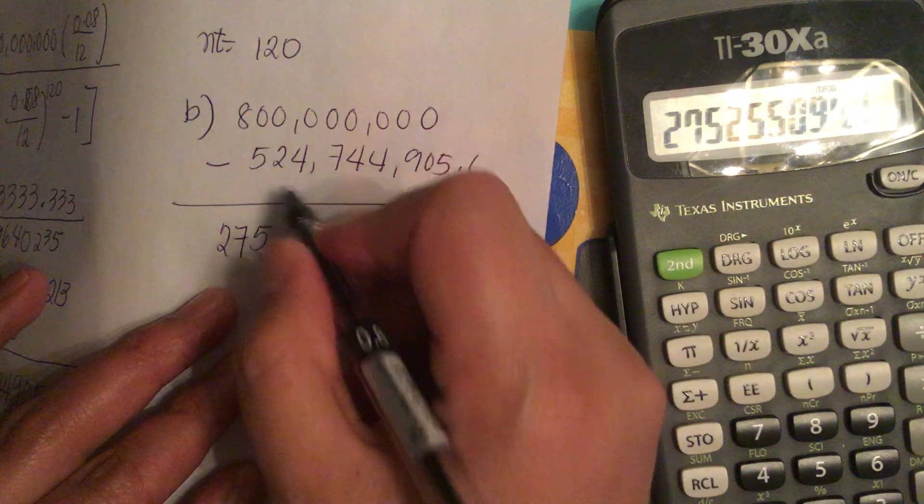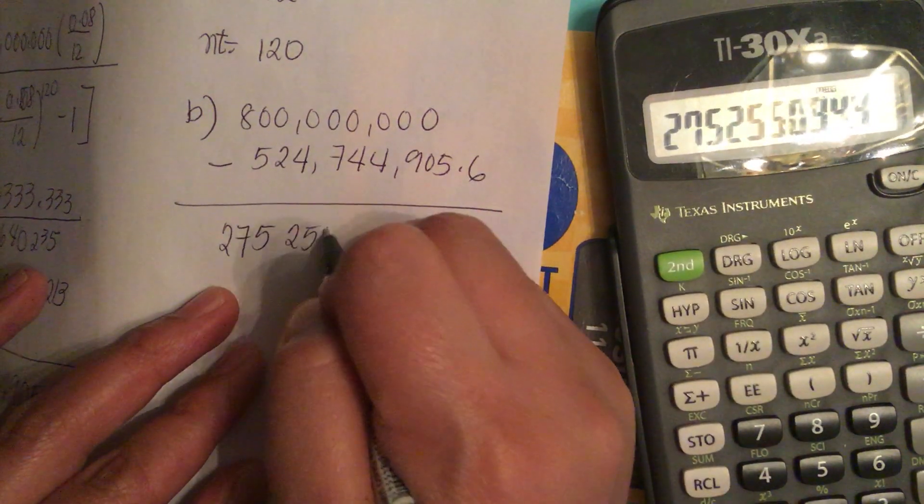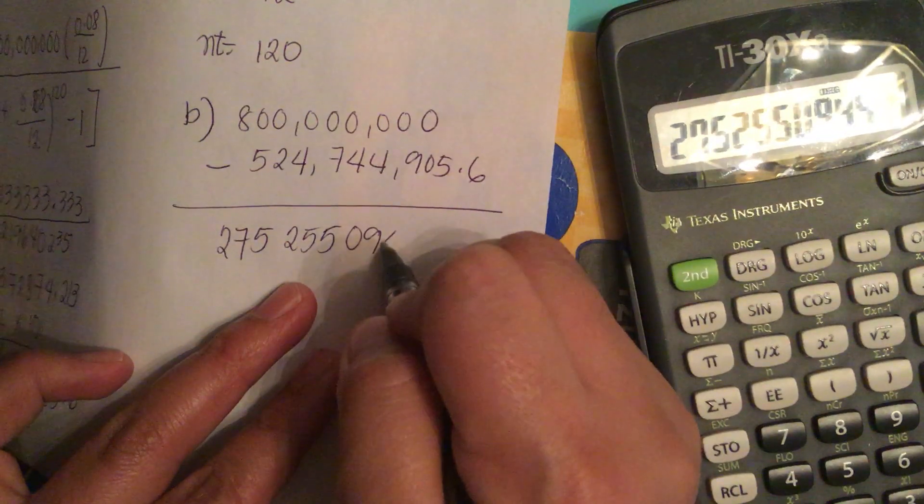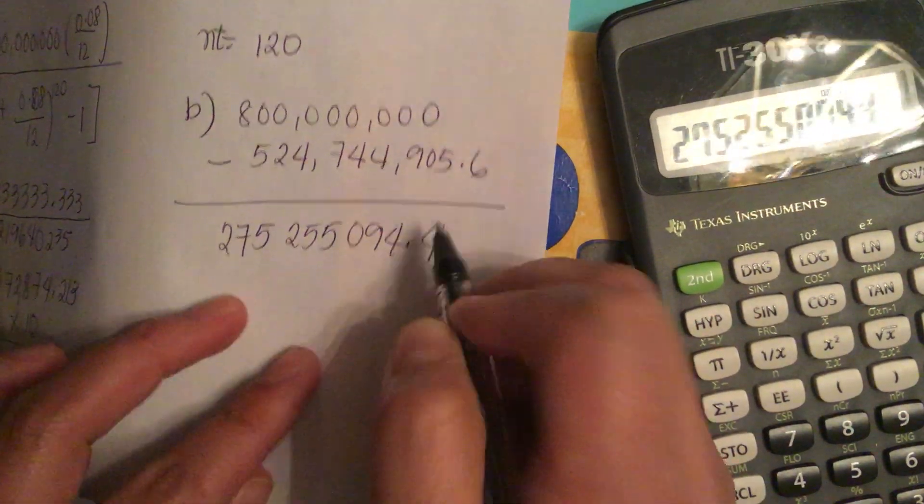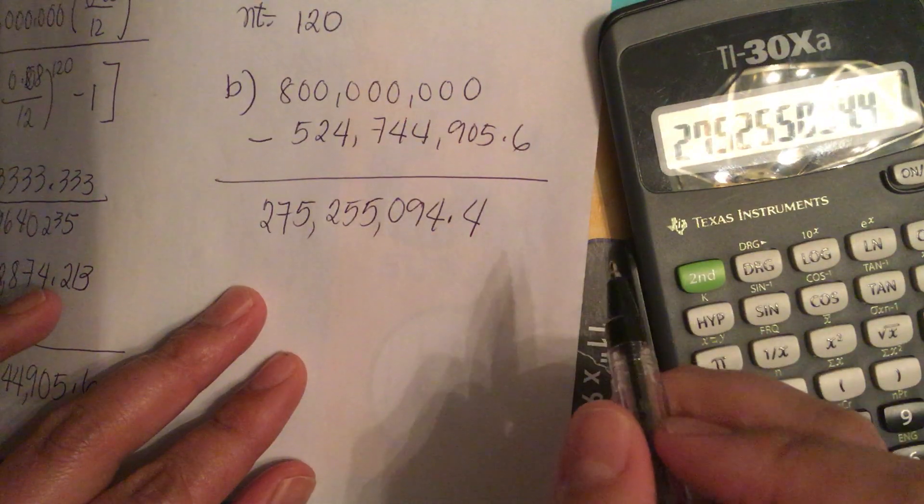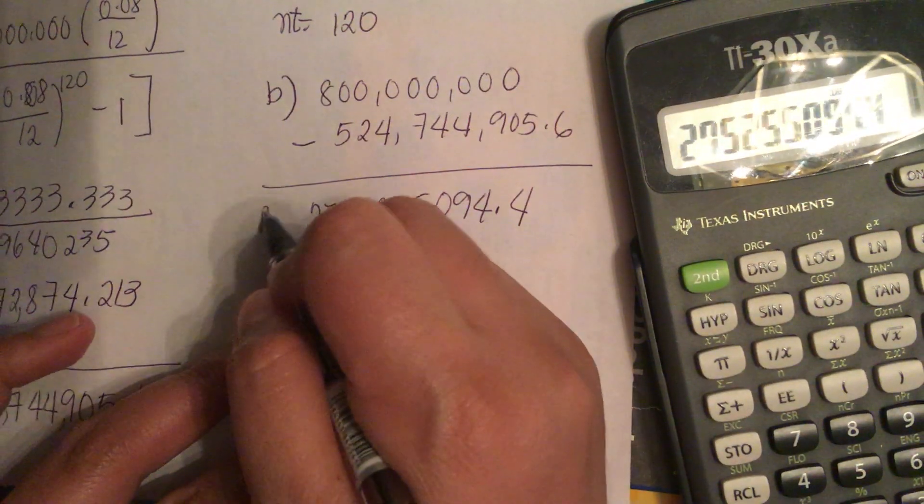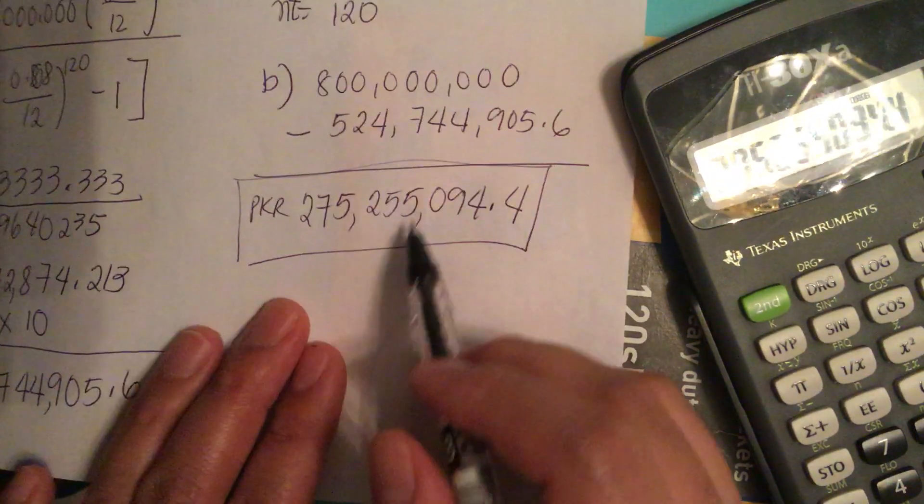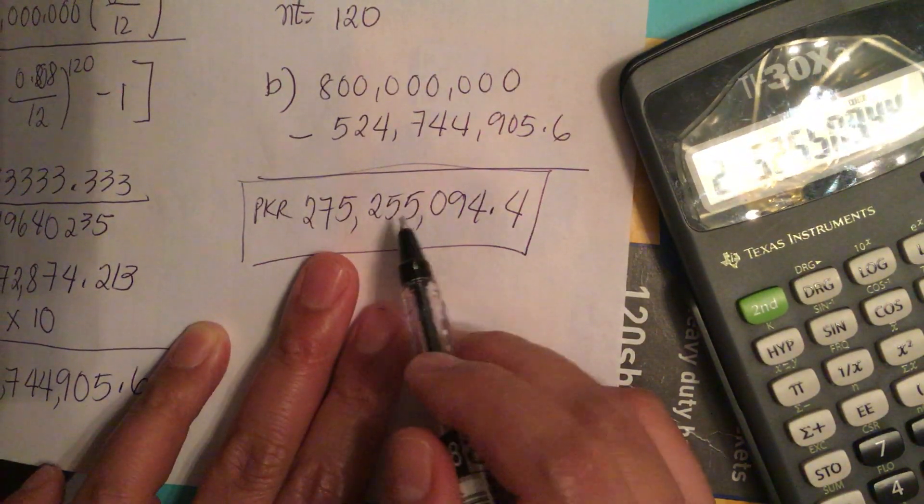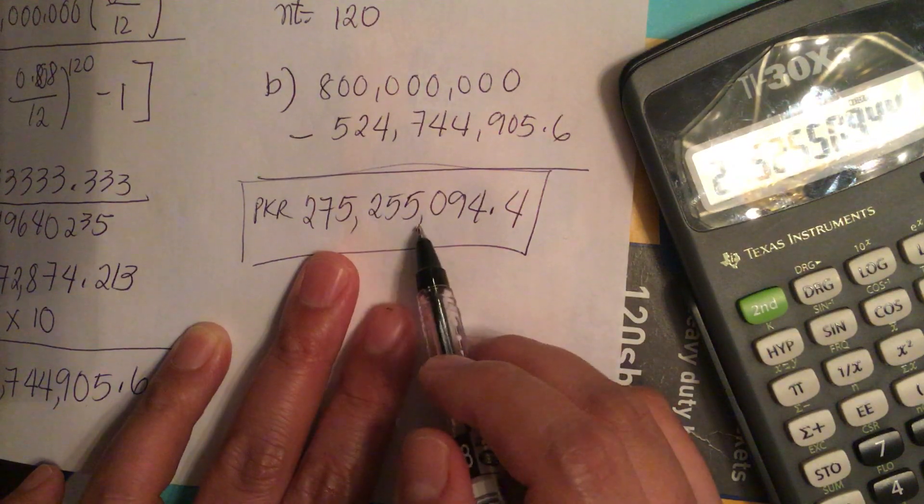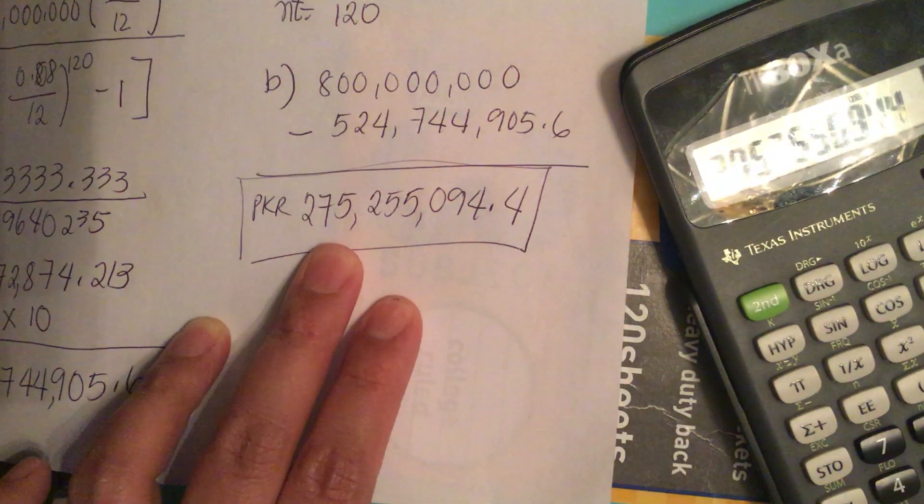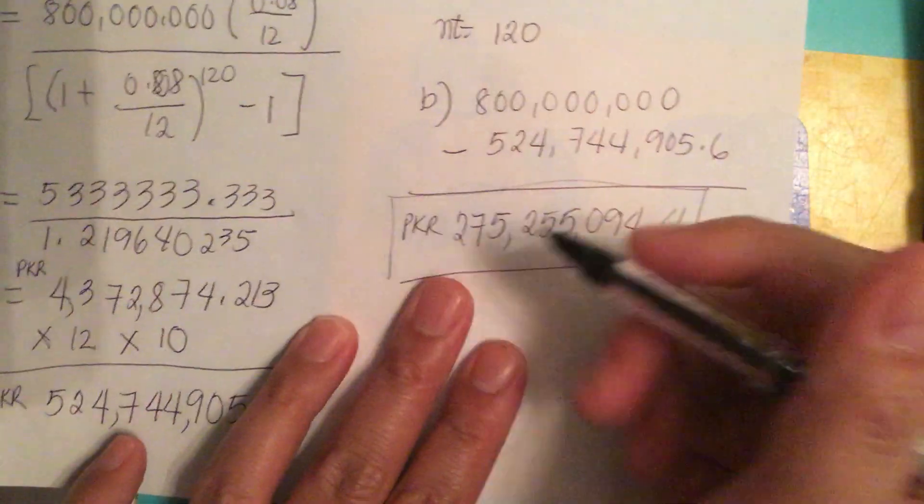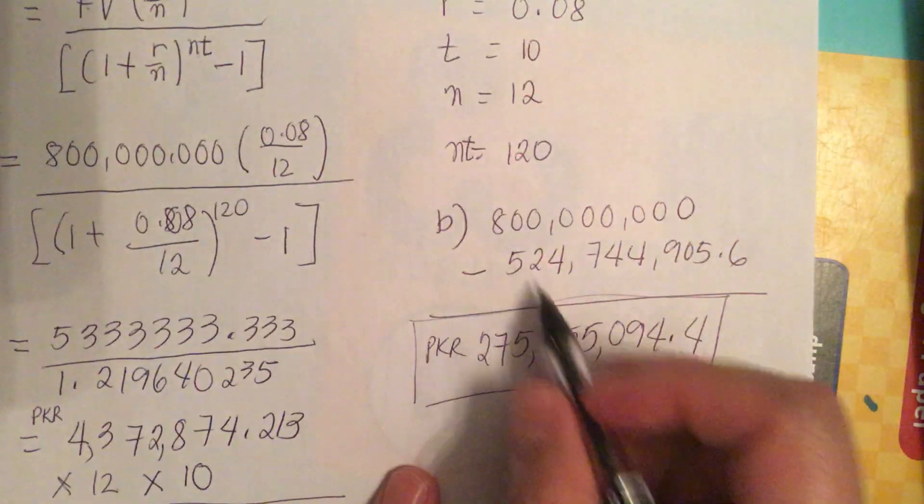It equals 275,255,094.4. So the interest is 275 million, 255 thousand, 94.4 PKR. This is part B.